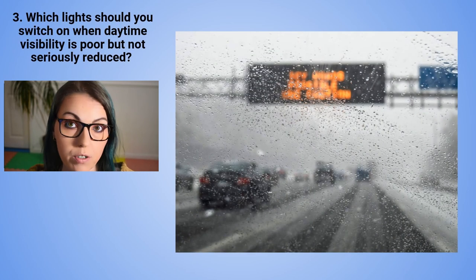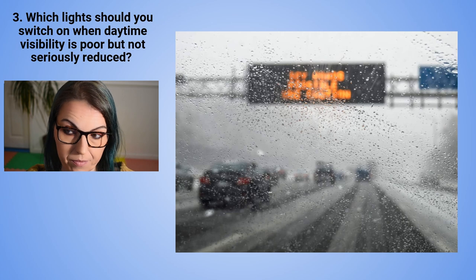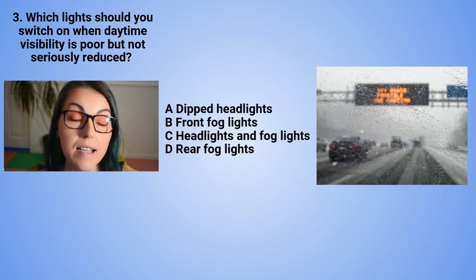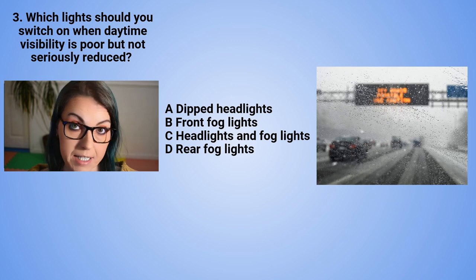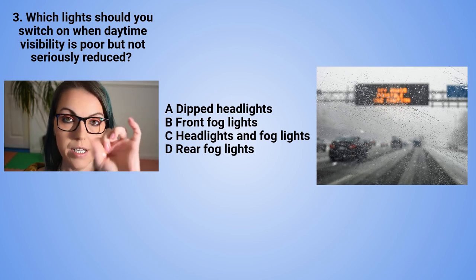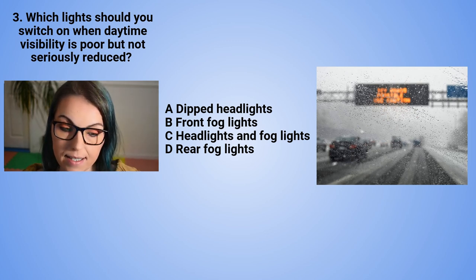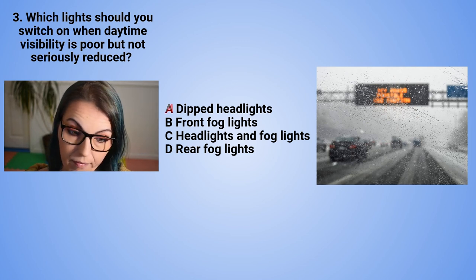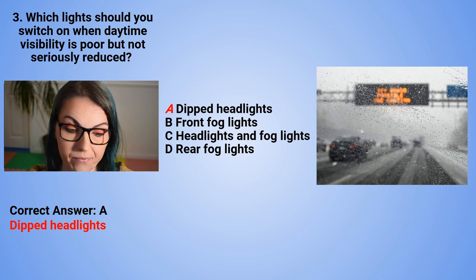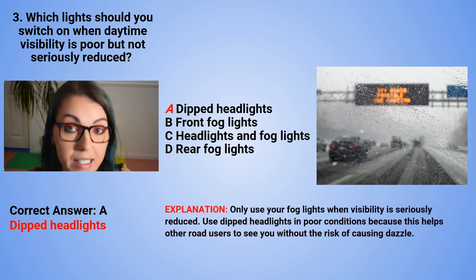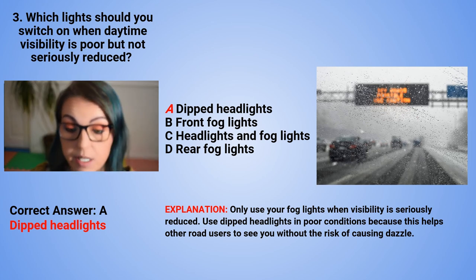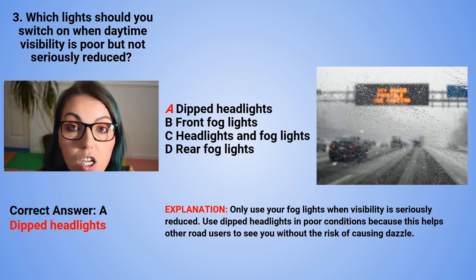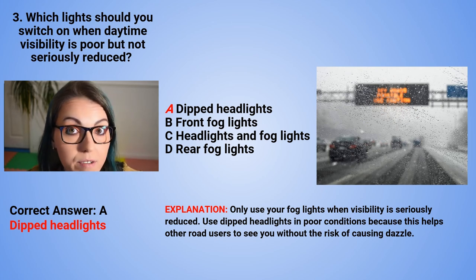Question 3: Which lights should you switch on when daytime visibility is poor but not seriously reduced? A. Dipped headlights. B. Front fog lights. C. Headlights and fog lights. Or D. Rear fog lights. The correct answer is A — dipped headlights. Only use your fog lights when visibility is seriously reduced. Use dipped headlights in poor conditions because this helps other road users to see you without the risk of causing dazzle, which might lead to serious incidents.